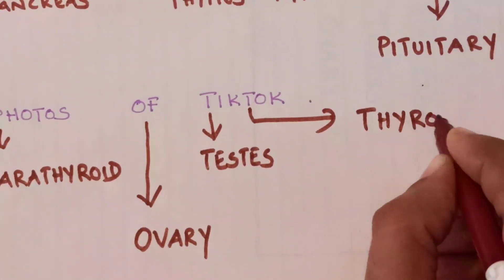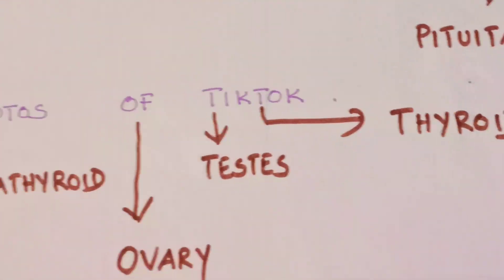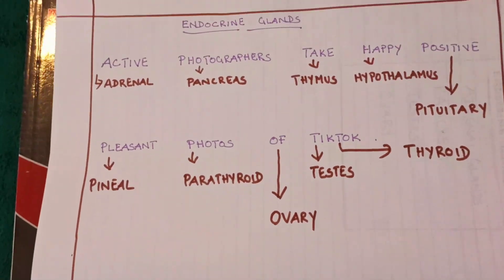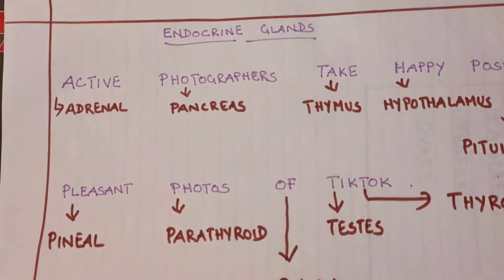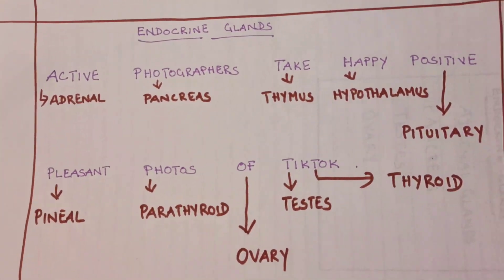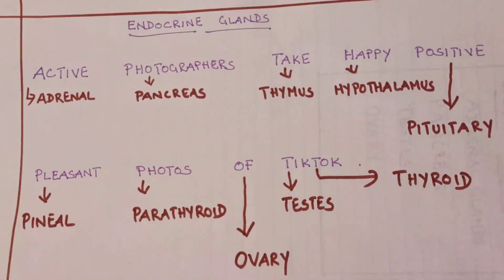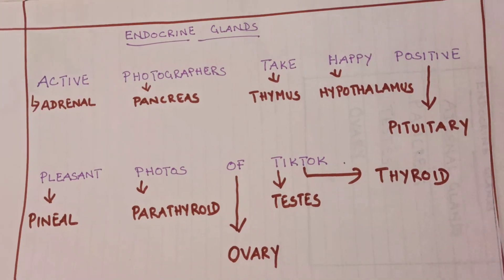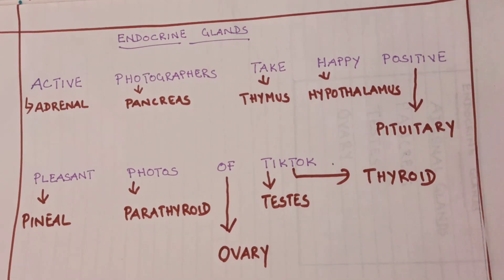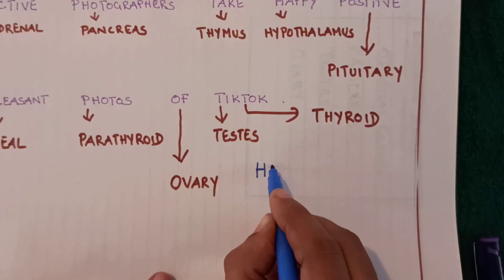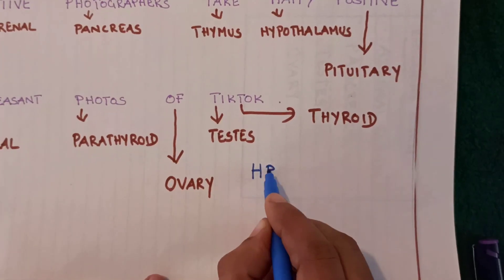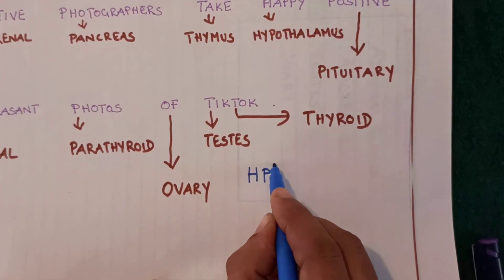So by remembering the simple sentence — active photographers take happy positive pleasant photos of tik-tok — you can recollect all ten endocrine glands.